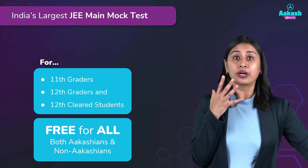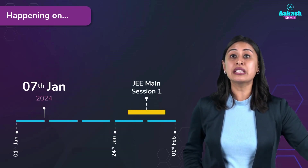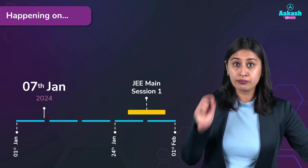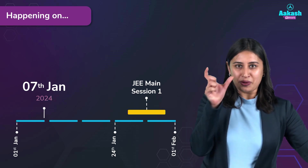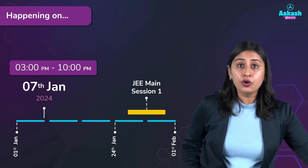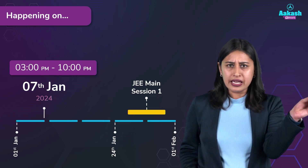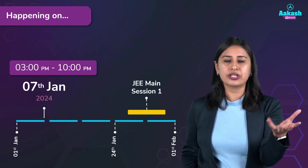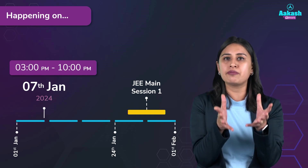When do you have this paper? It is on 7th January 2024. Block it on your calendars. This paper will be available in the window period of 3 p.m. to 10 p.m. In this window period, you can give the paper anytime — you just have to sit for 3 hours anytime between 3 p.m. to 10 p.m.